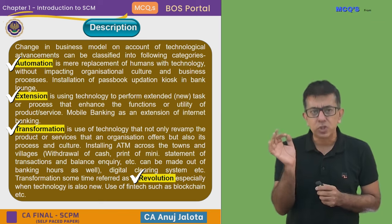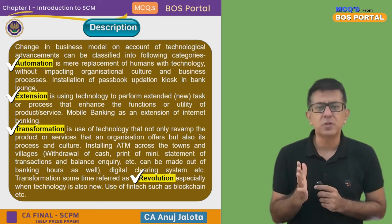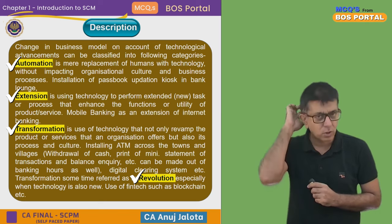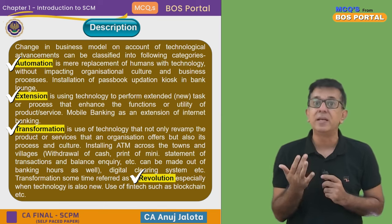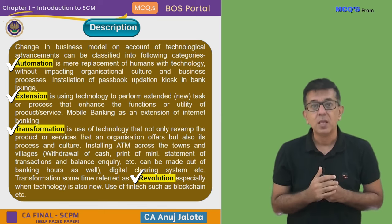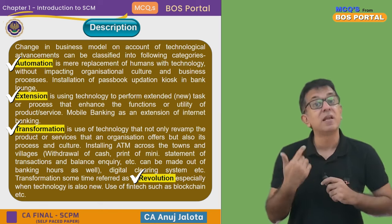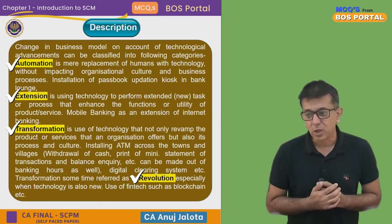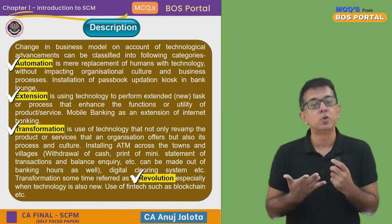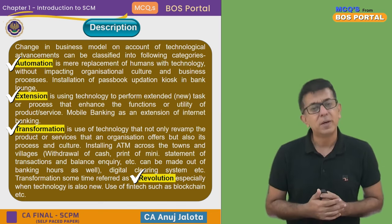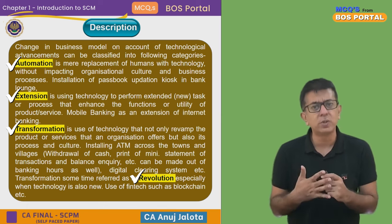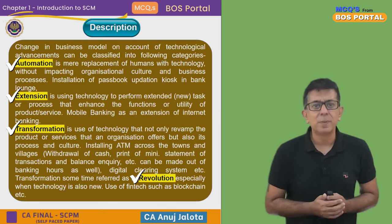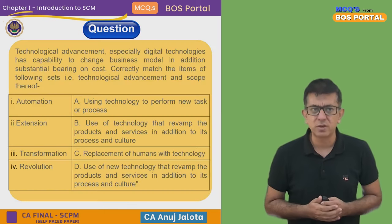Fourth — Revolution. Revolution is like transformation, but it uses completely new technology. To give an older example: when the internet came, it was a revolution. Now, with blockchain coming, it is a revolution — it is changing how things are done. Cryptocurrency is a kind of revolution; it is changing how currency transactions take place across the world, even if it hasn't started much in India yet.